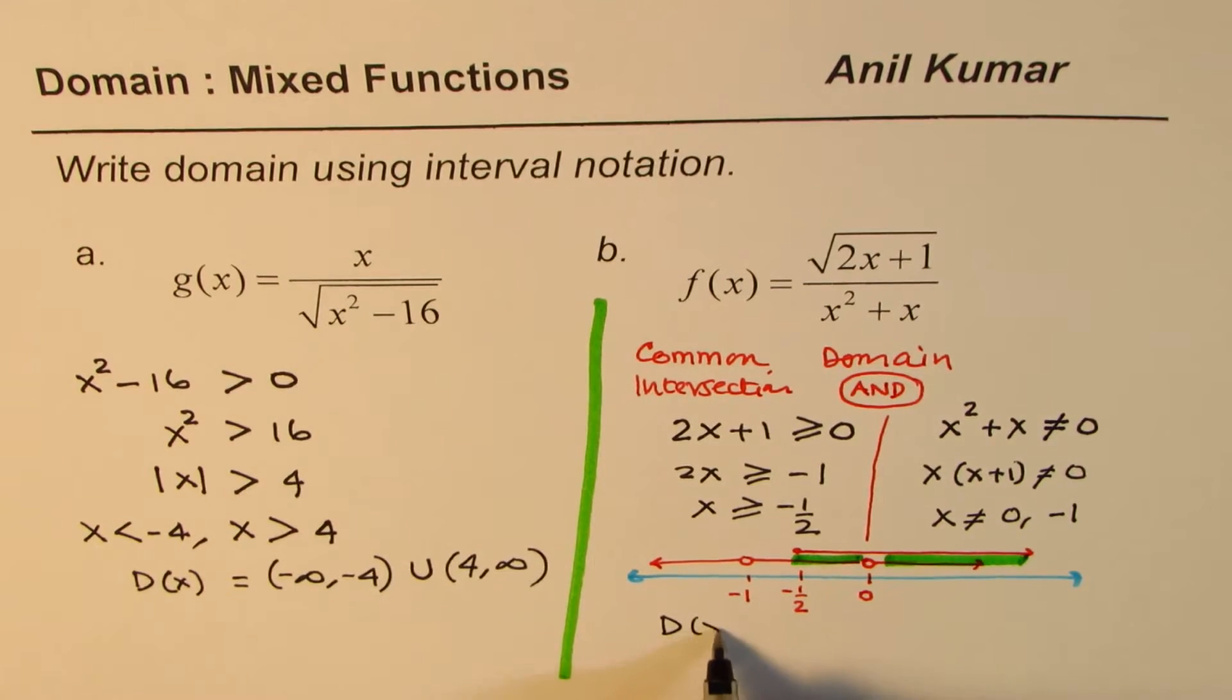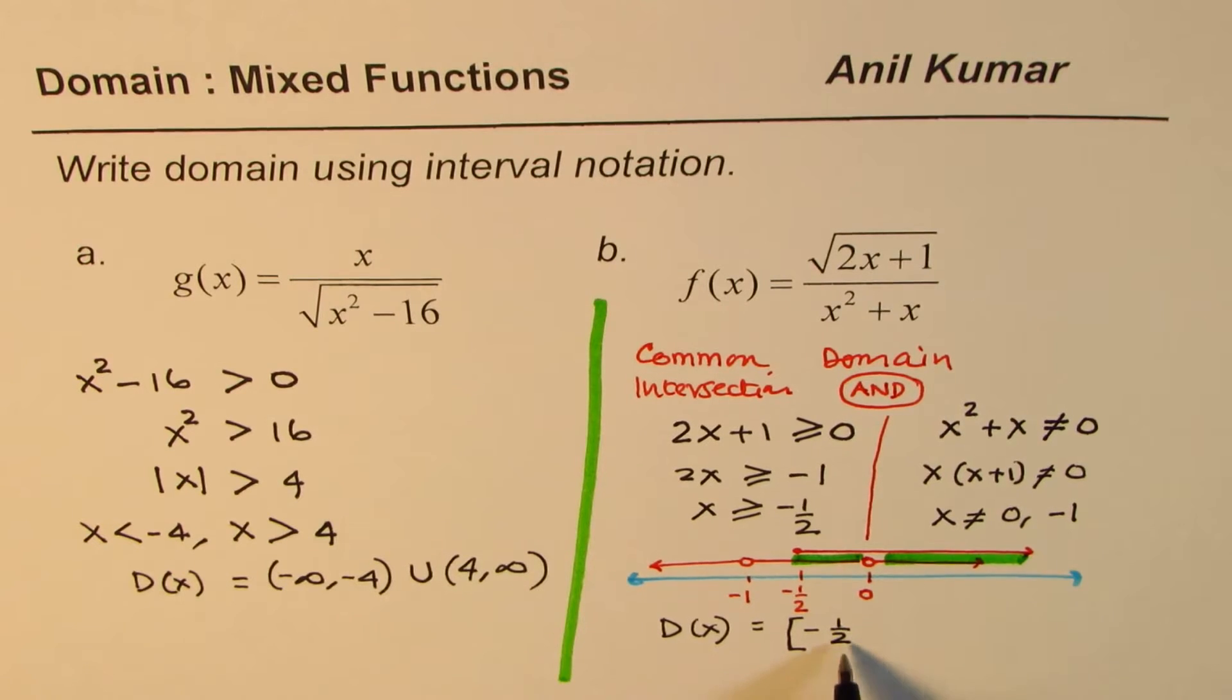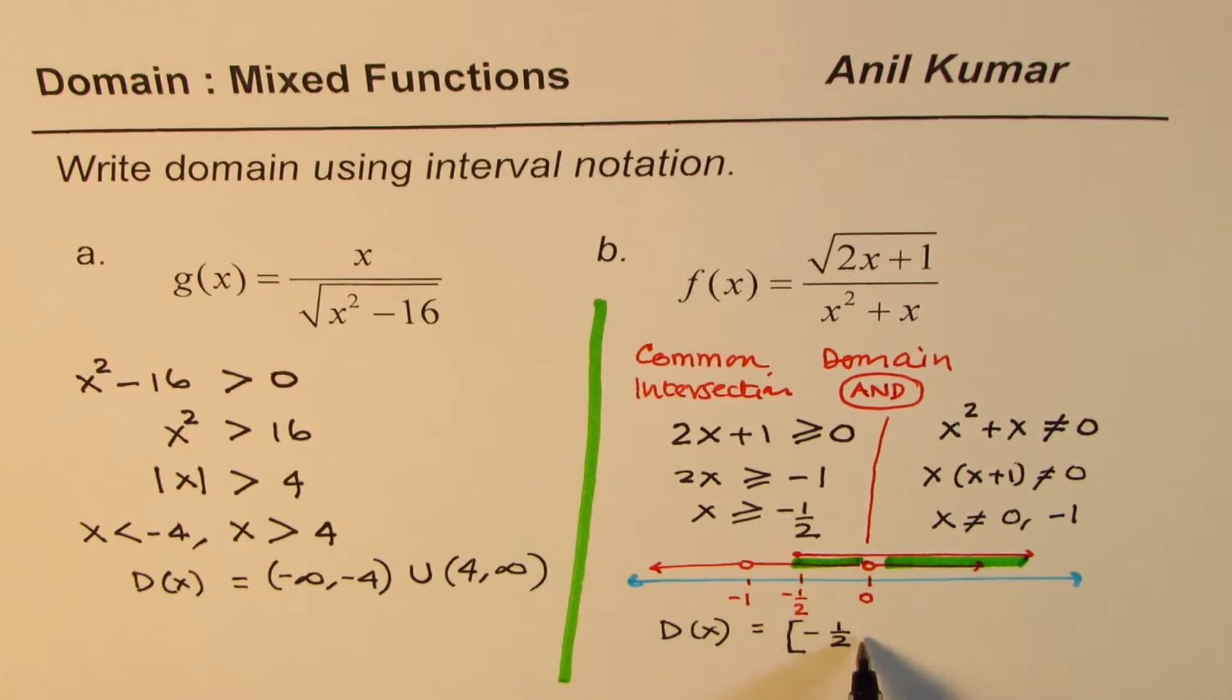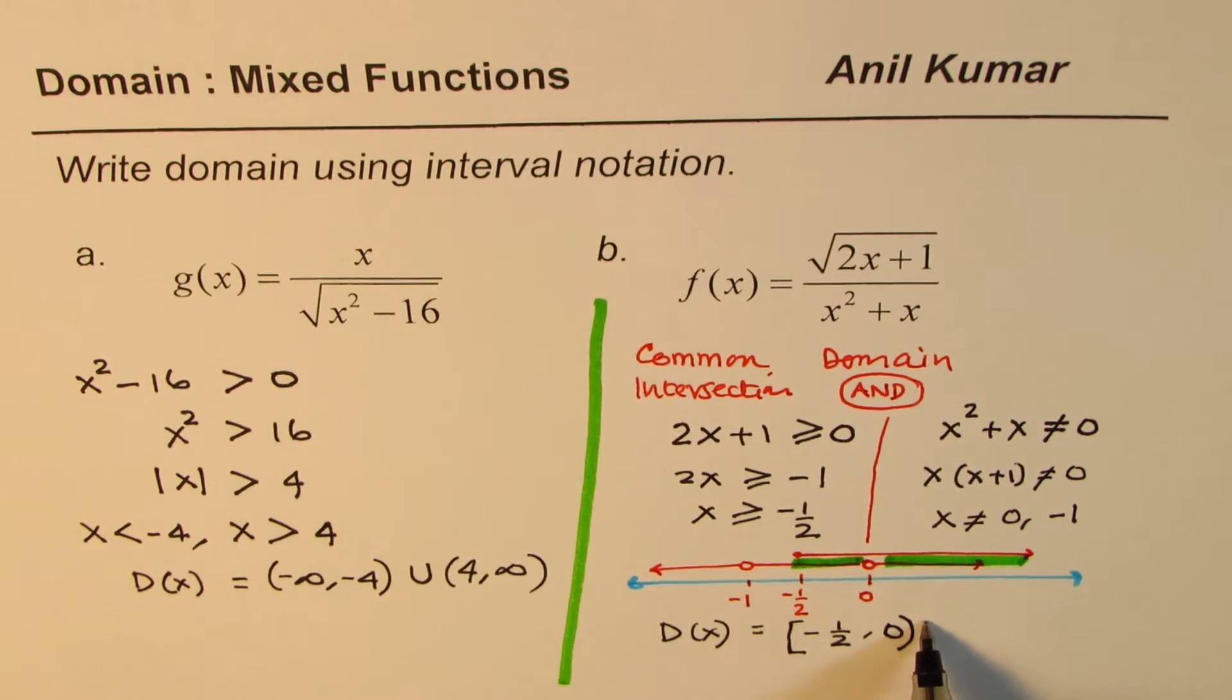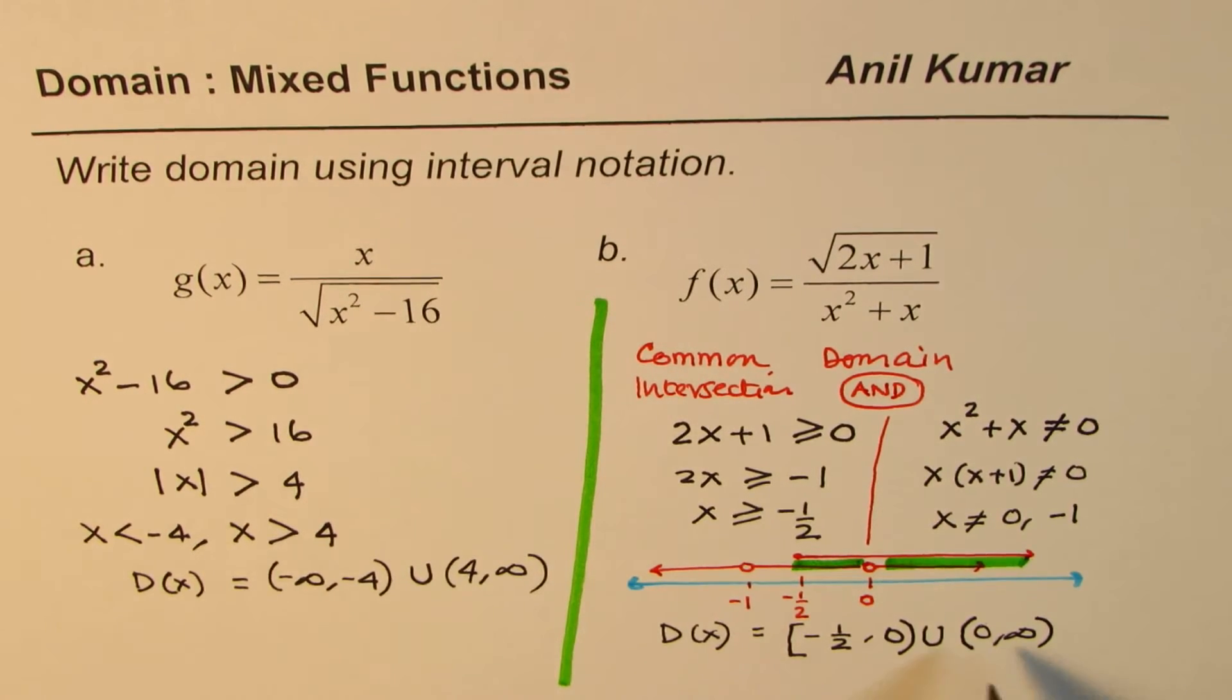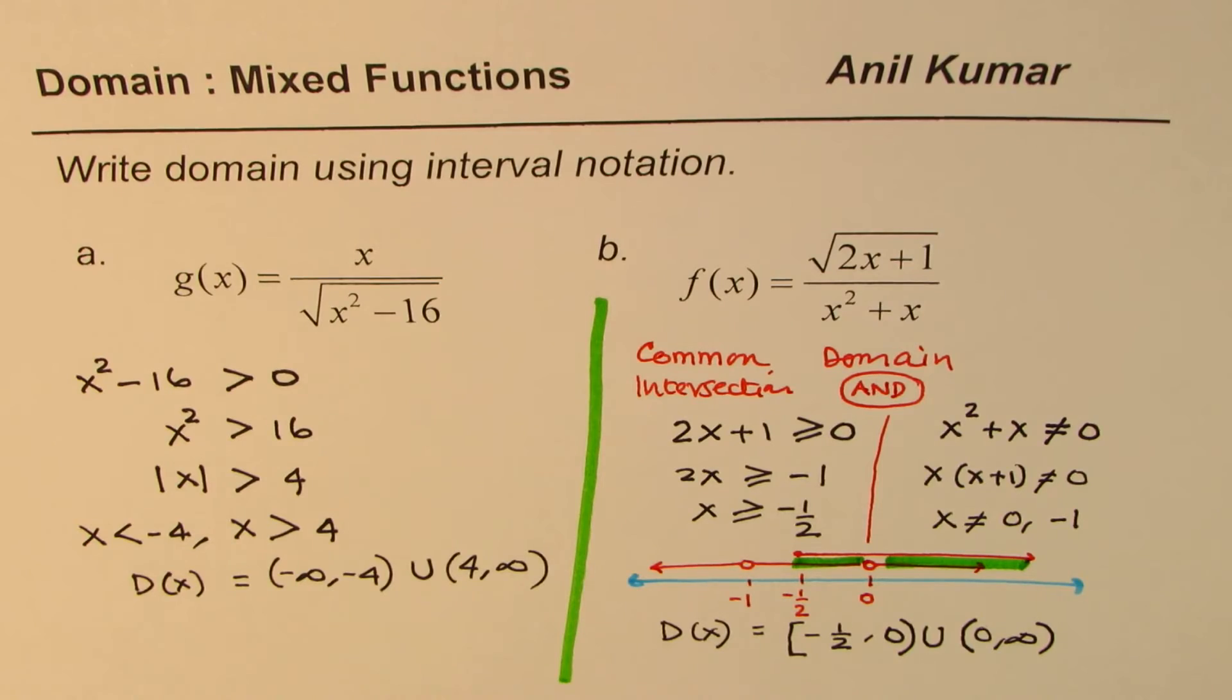Then we can write domain of this function as minus half is included, this close bracket includes minus half, and then you go up to 0. 0 is not included, and then union we have from 0 to positive infinity. Infinity can never be included, so that is how you are going to write the domain of this particular function.